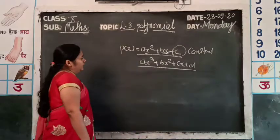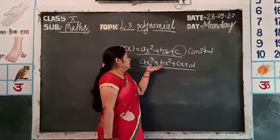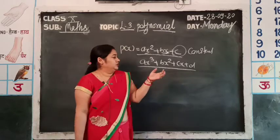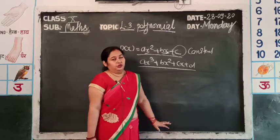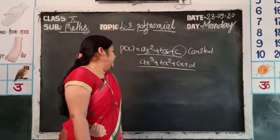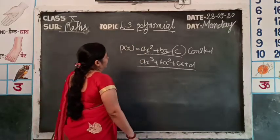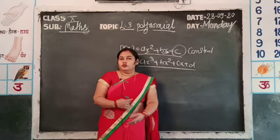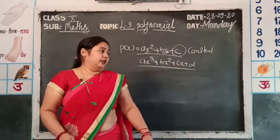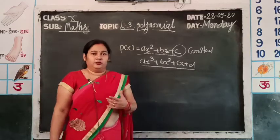Now we start the zeros of a polynomial. Zero of a polynomial means: the value of x which, when substituted, gives the answer zero — that is called the zero of the polynomial. In tenth class, you find the zeros of polynomials by doing factorization, making two factors, which give the zeros alpha and beta.